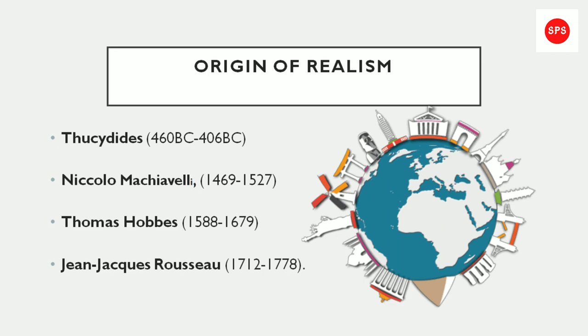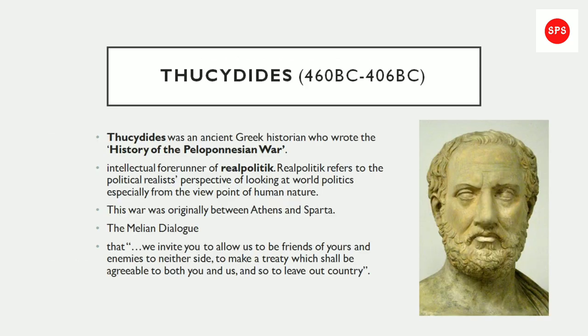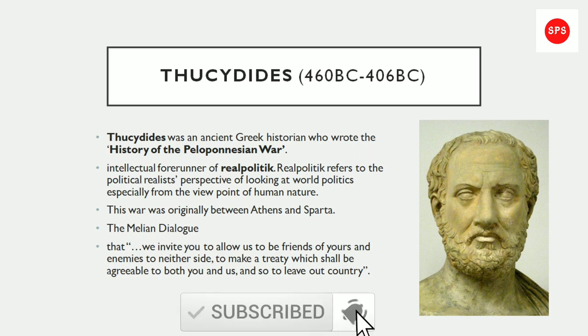We find the concept of realism in the writings of Thucydides, Niccolò Machiavelli, Thomas Hobbes, and Jean-Jacques Rousseau. Thucydides was an ancient Greek historian who wrote the history of the Peloponnesian War. In this book he described the intellectual forerunner of realpolitik.